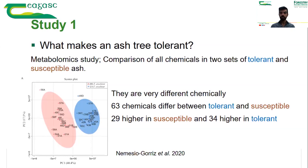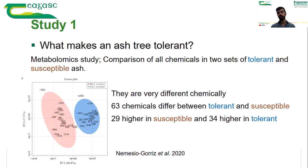The other group of 20 trees were selected two years after the arrival of ash dieback to a site. They were showing dramatic, severe symptoms of the disease and died soon after, and therefore were classified as susceptible ash. By comparing these two groups we were hoping to learn what makes them different.